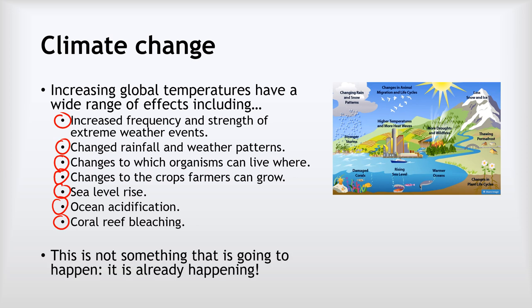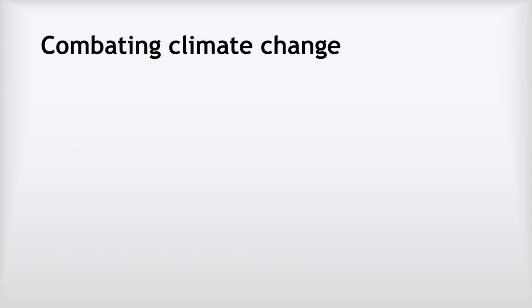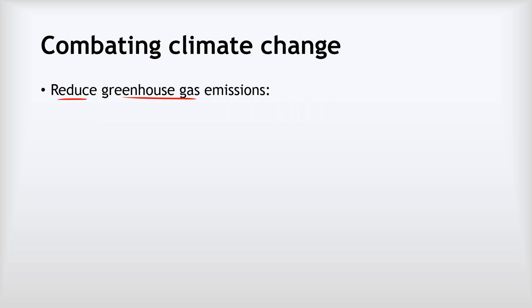These things are not something that will happen in the future — they're already happening. We need to collectively take action as a human race to minimise further changes and combat climate change. The number one priority is to reduce greenhouse gas emissions, which we can do in a few ways.